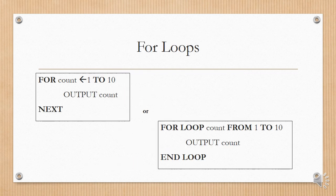For loops: you can use either of these constructs. You can say FOR, with your loop counter as count, getting the value 1 up to 10, then output count as an example, and then NEXT. Alternatively, you can write FOR LOOP, with loop counter count, FROM 1 TO 10, and at the end of the for loop don't forget END LOOP.